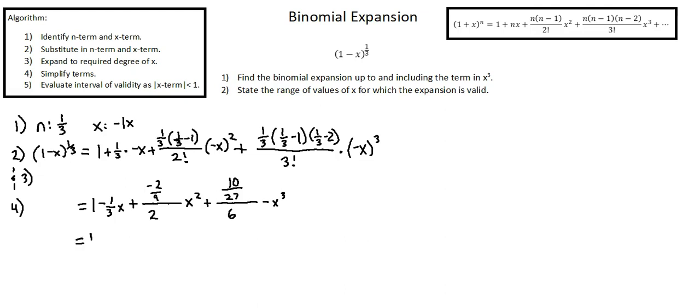And now we'll fully simplify. First term, 1. Second term, -1/3 x. Third term, notice we have a negative numerator and positive denominator. So we will have -2/9 divided by 2 is -2/18, which we can simplify to -1/9 multiplied by x^2. And our final term, we have positives in the numerator and denominator multiplied by -x^3. So this term will be minus 10/27 divided by 6, which gives a result of 5/81 times x^3. And I'll show in my notation that while I've expanded to the term x^3, the actual expansion is an infinite series. So we've completed Step 4.